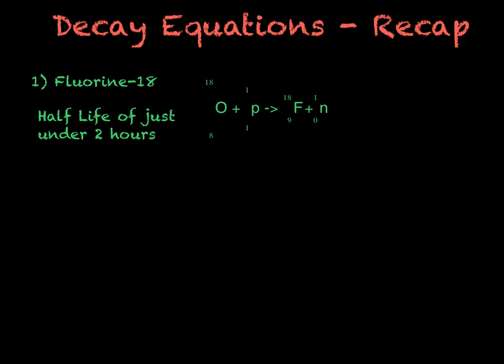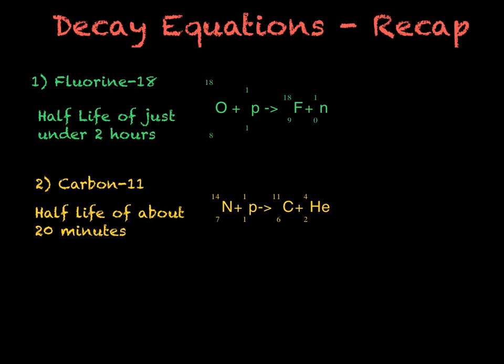Our next radioisotope is carbon-11. Carbon-11 is made using nitrogen-14 and has a half-life of about 20 minutes. However, this time instead of releasing our neutron, we release our helium here, our 4-2, which is very similar to our alpha particle.